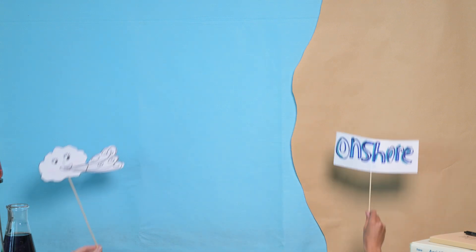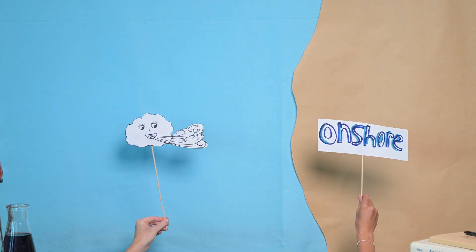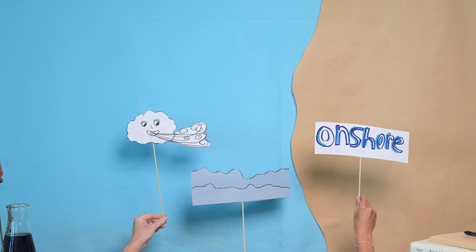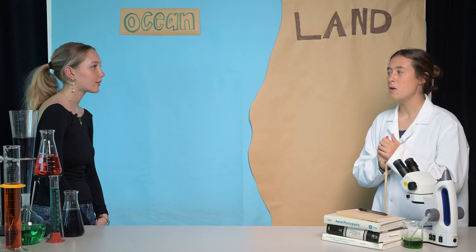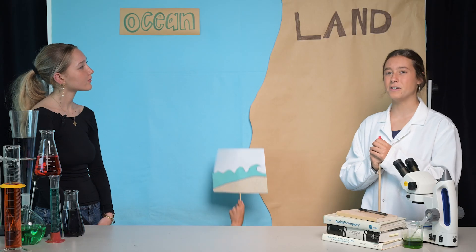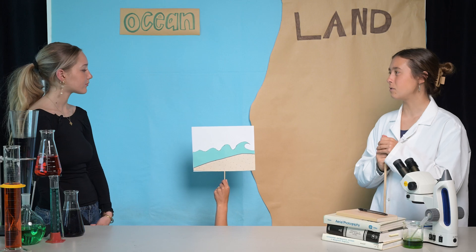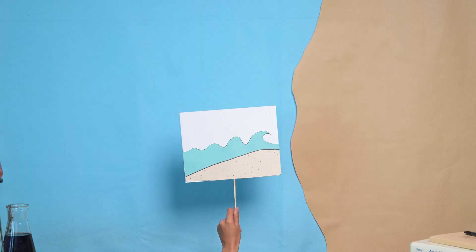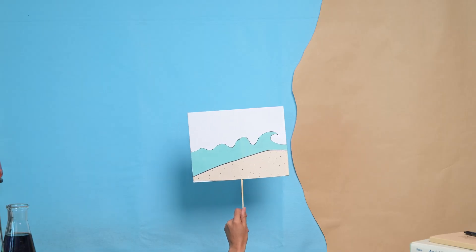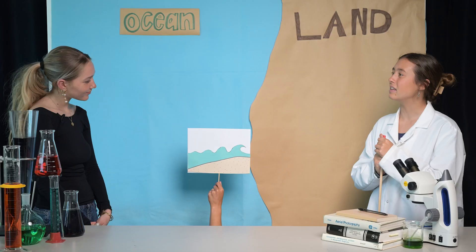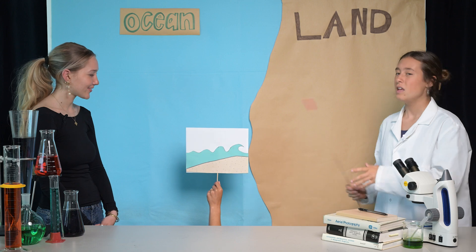Onshore wind is wind that blows from the ocean to the land, making the wave super bumpy and choppy. I think I'm starting to get it, but what makes a wave break? Waves break when they reach the sandbar. As a wave is approaching the sandbar, the depth of the water decreases, therefore making it shallow enough for the wave to break.